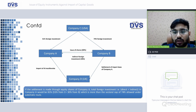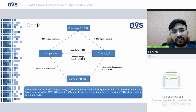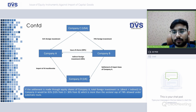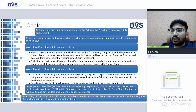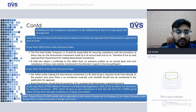If the settlement is made through equity shares of Company A, total foreign investment (direct plus indirect) in Company A would be 81%: 51% direct from C, plus 30% from B. The 30% from B is counted because Company C holds foreign investment in Company B. To be safe, the full 30% is considered, giving 30 + 51 = 81%, which exceeds the sectoral cap of 74%. Thus, in this scenario, government approval would be required.